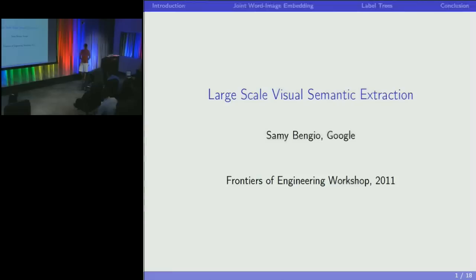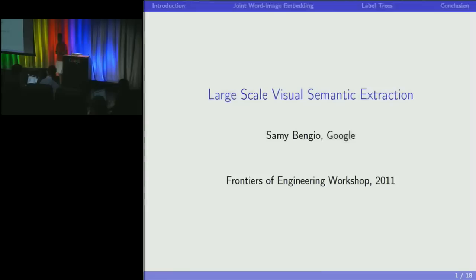Thank you, Amar. Yesterday there was a question about whether we were only using web documents to infer some semantics about the world. Today I'm going to show you an example of where we can actually use images to infer text semantics, if you have enough data.